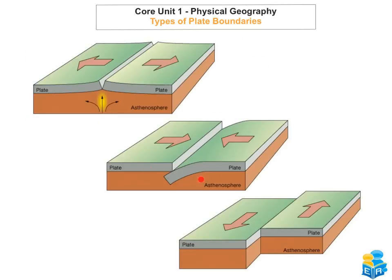Here we have three different images, and these three different images represent the three different types of plate boundary. This one here, where the plates are pulling apart, is what we call a constructive plate boundary. This one here, where the plates are actually colliding, is what we call a destructive plate boundary. And this one, when the two plates are sliding past each other, is what we call a conservative plate boundary.